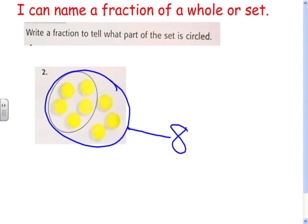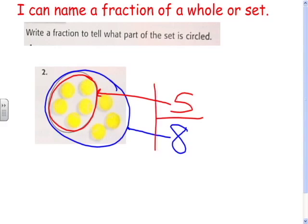And then how many are shaded, or how many are circled? One, two, three, four, five. So five are circled. So what fraction of this set is circled? Five out of eight is what it means, and the fraction is five-eighths.